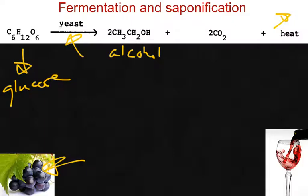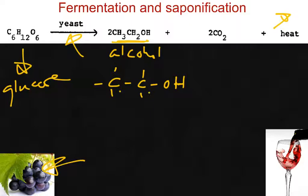The alcohol that is typically produced — which folks drink, and a lot of bad things happen after that — is ethanol. They wrote the condensed structure right here, and this right here would be the structural formula of ethanol. Remember, alcohols have an OH group on carbon, and 'Et' refers to two carbons, so that's the structural form of ethanol.